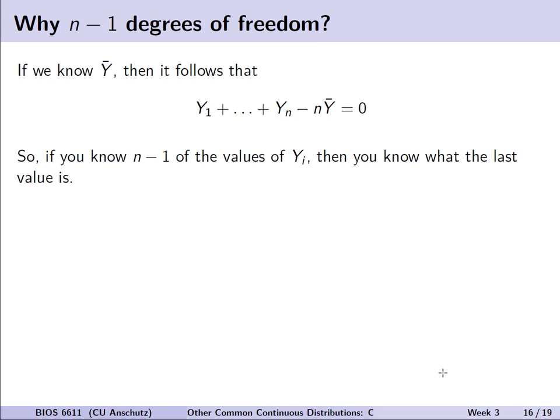Where does the n minus 1 degrees of freedom come from? If we calculate and know y-bar, then the sum of all observed random variables y1 through yn minus n times y-bar equals zero by definition of the sample mean. So if we know n minus 1 of the y values, we can determine the last one. Since we've already estimated the sample mean, we've spent one degree of freedom — fixing that quantity in the estimation of the statistic.